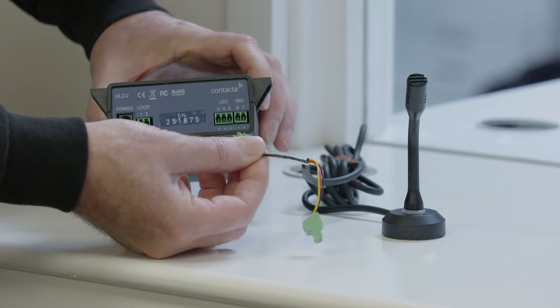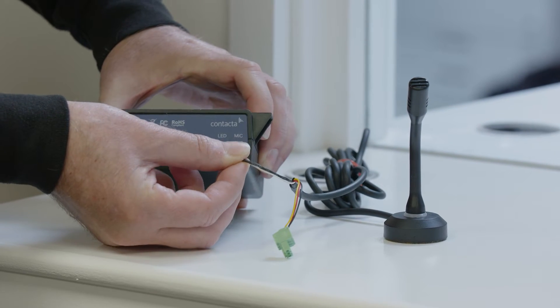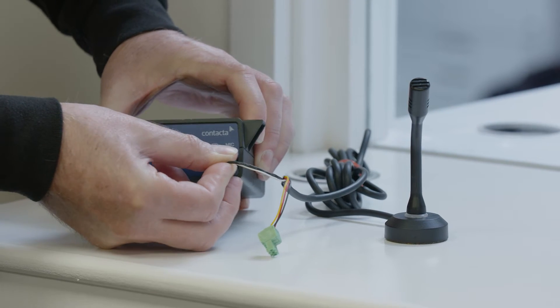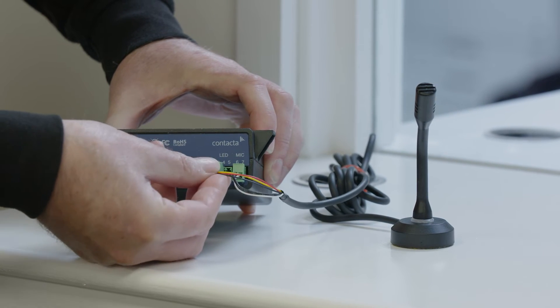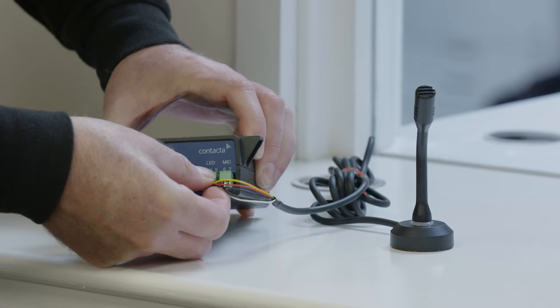Connect the microphone connector into the microphone sockets labeled 6 and 7. Take the LED connection and insert it into the LED sockets labeled 3, 4 and 5.